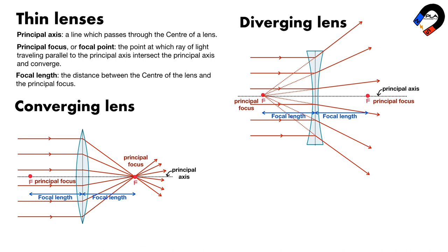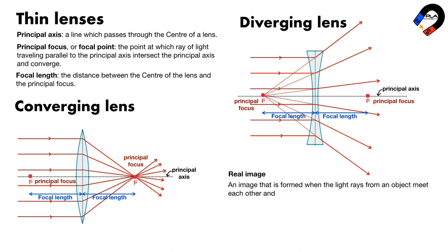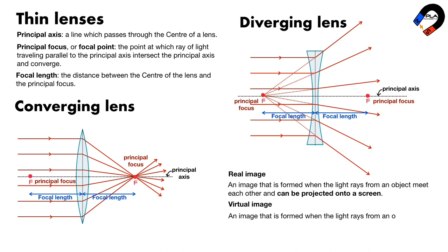The images produced by lenses can be one of two types: a real image or a virtual image. A real image is defined as an image that is formed when the light rays from an object meet each other and can be projected onto a screen. A virtual image is defined as an image that is formed when the light rays from an object do not meet, but appear to meet behind the lens, and cannot be projected onto a screen.